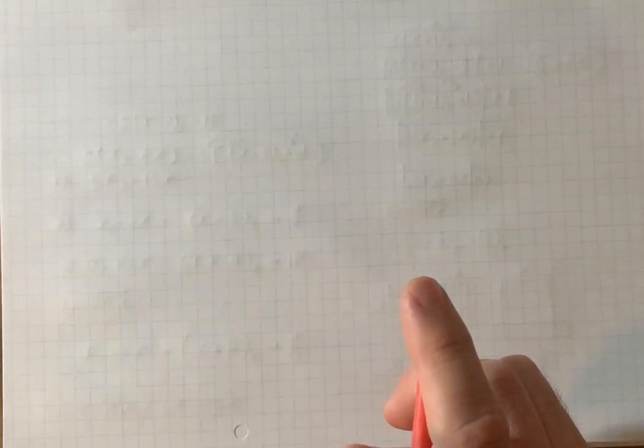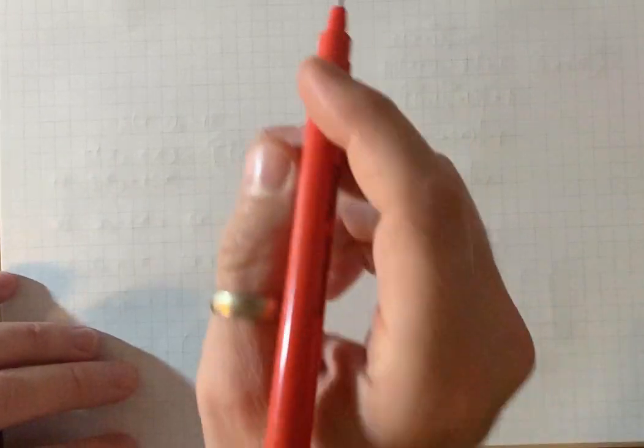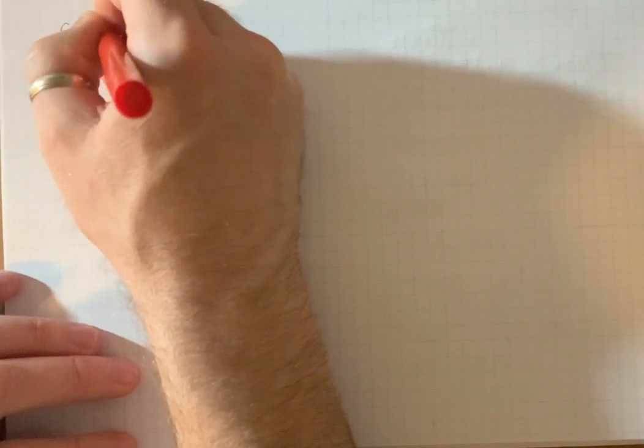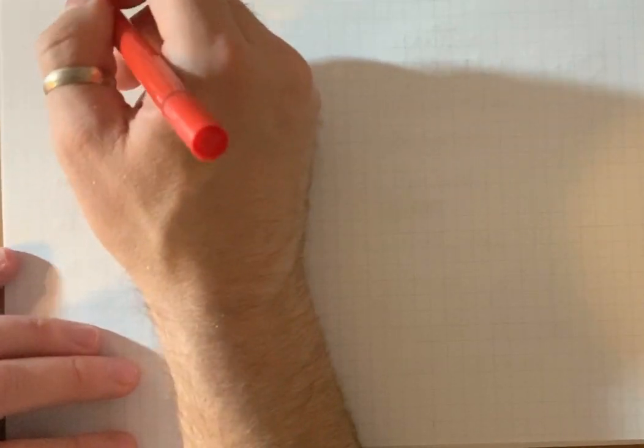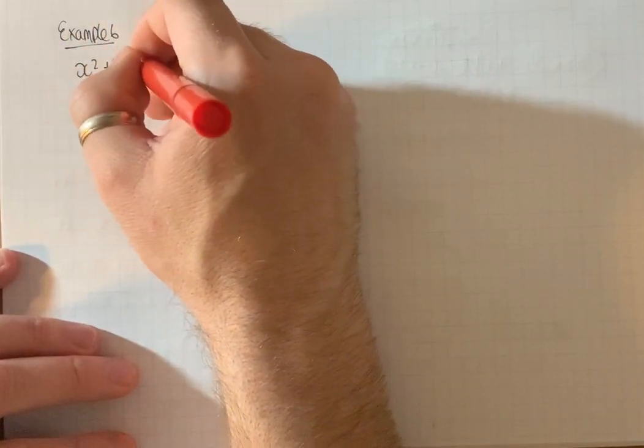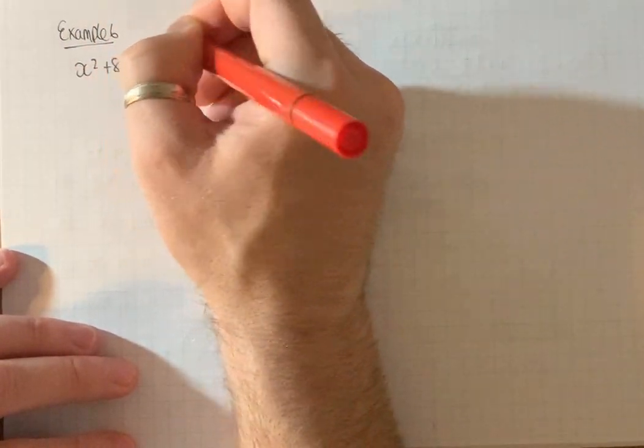The next part of this question involves finding solutions using the complete the square method. So let's go straight on to Example 6. Solve the equation x squared plus 8x plus 10 equals 0.